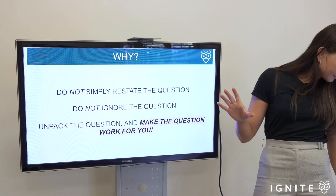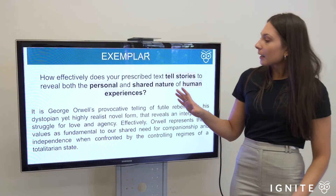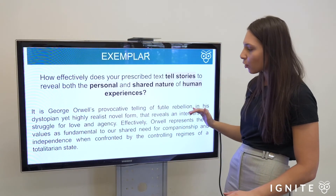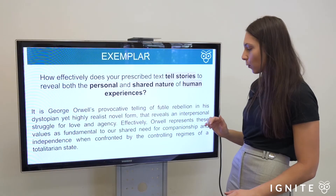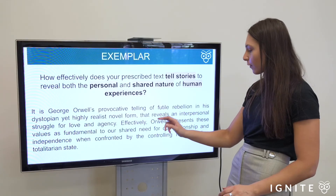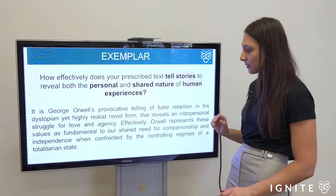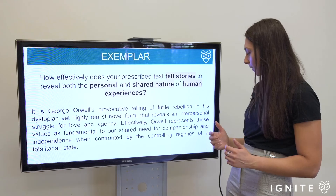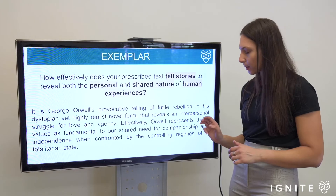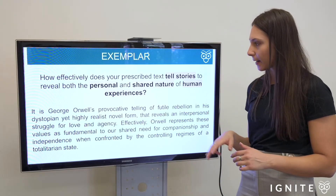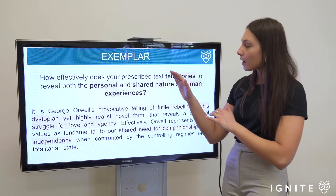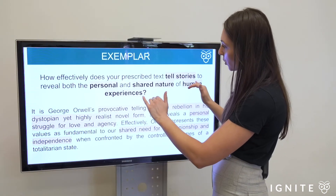Having said all that, let's look at an exemplar thesis: 'It is George Orwell's provocative telling of futile rebellion in his dystopian yet highly realist novel form that reveals an interpersonal struggle for love and agency. Effectively, Orwell represents these values as fundamental to our shared need for companionship and independence when confronted by the controlling regimes of a totalitarian state.' Does that answer the question? Let's look at where I've inserted my answering of the question's key terms.